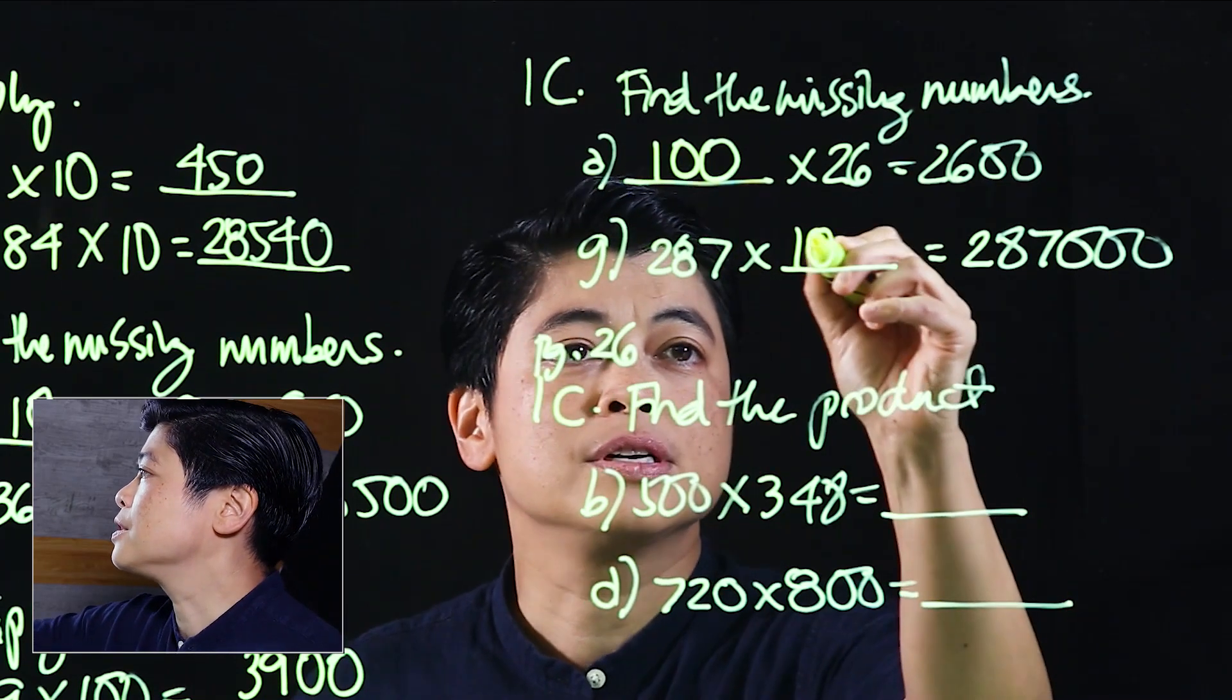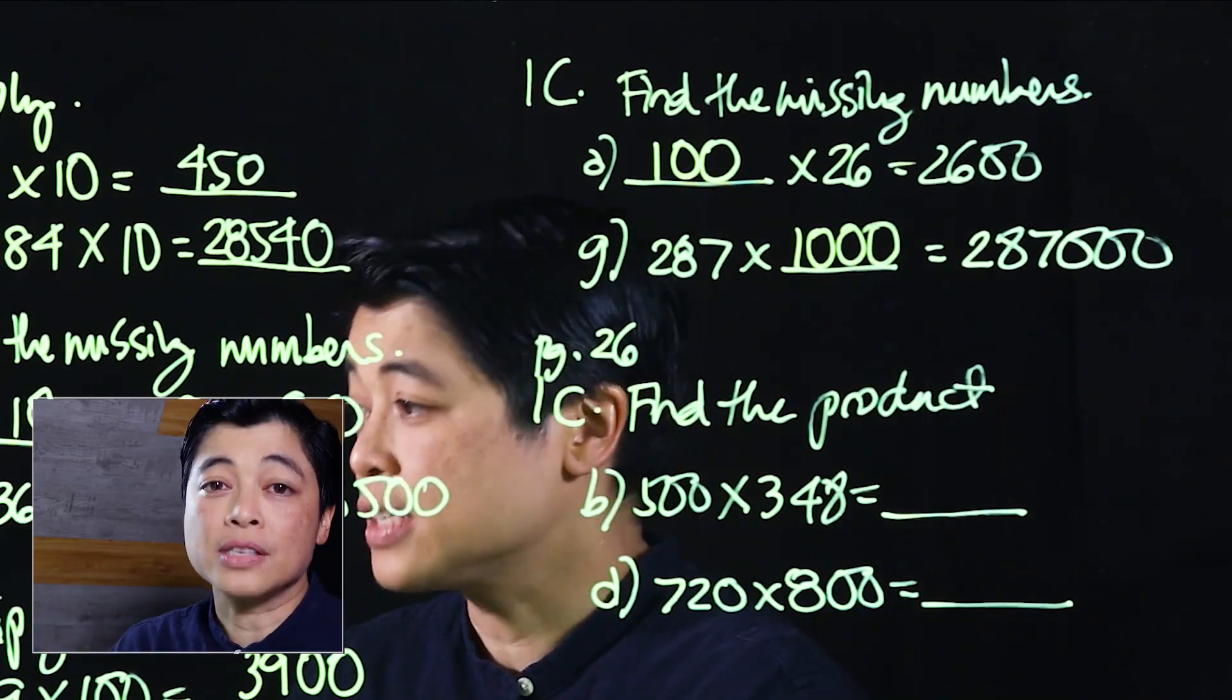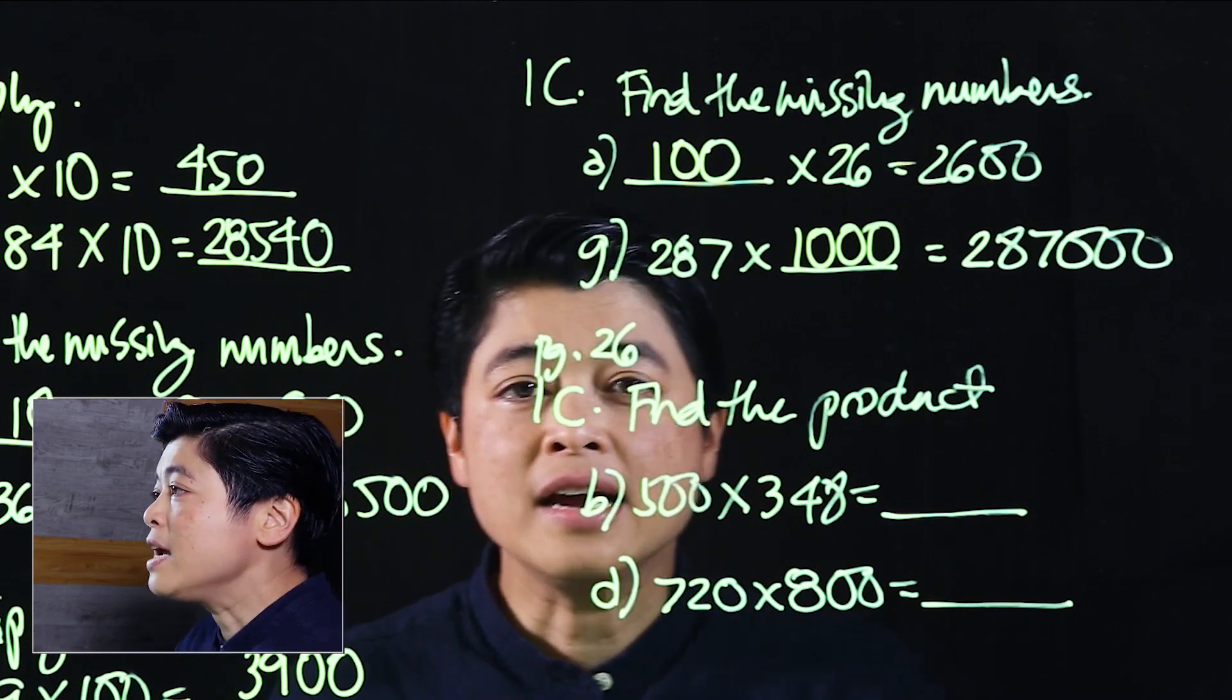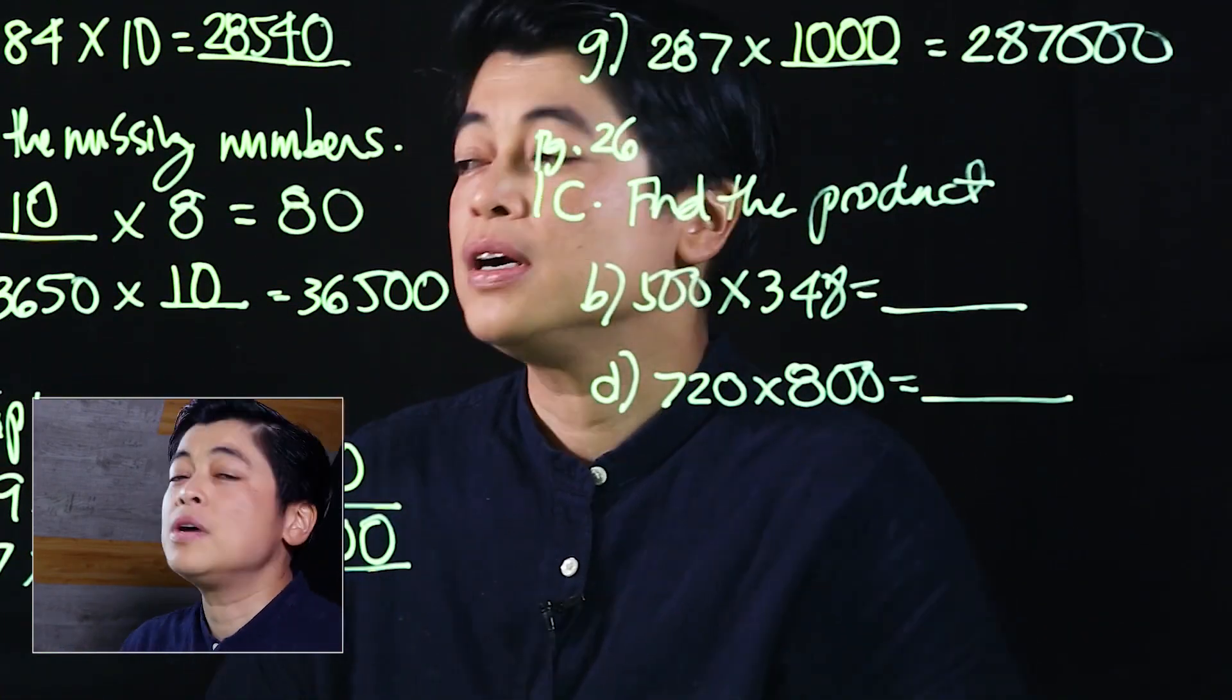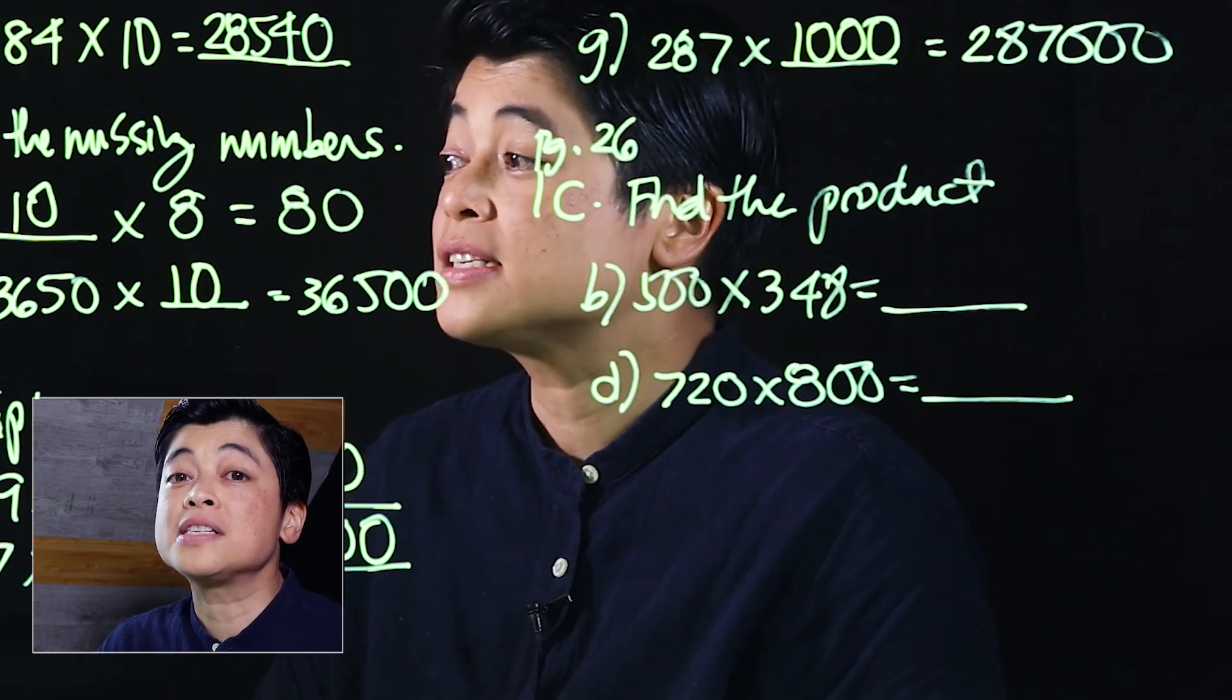Using the same thought process, 287 times blank equals 287,000. So again, this must be 1000.